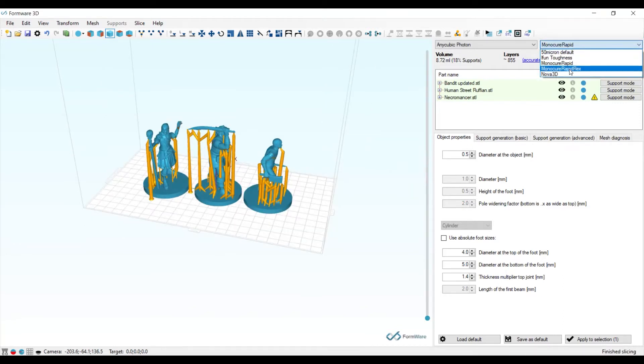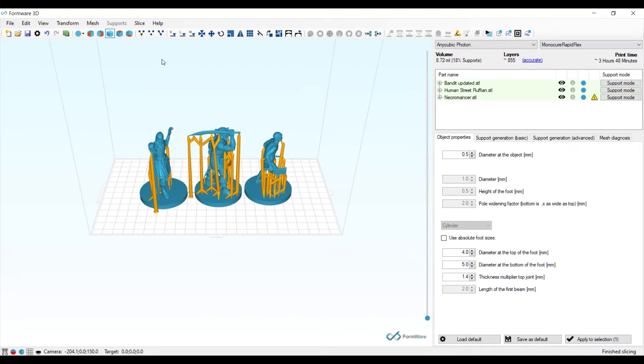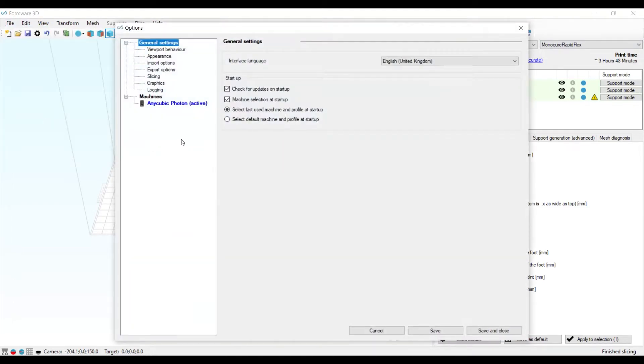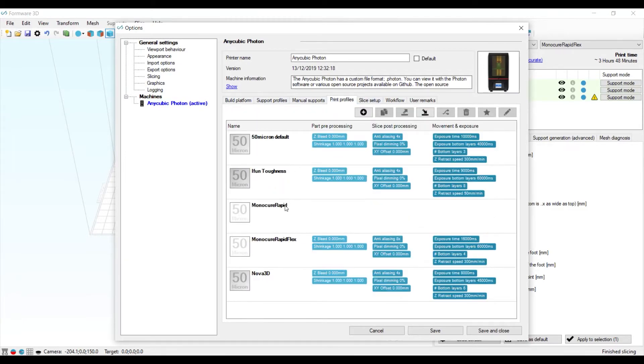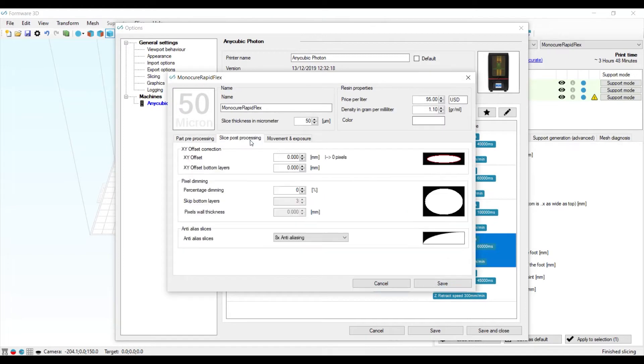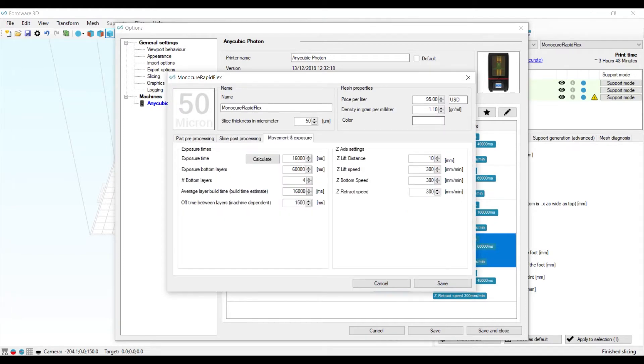On my models, I will change my profile to the Monoflex and then slice it. In this software, I can go into the configuration, into my machine, into my print profiles, and then for each resin type that I have, I can specify the settings to whatever is recommended by the manufacturer, which I highly recommend as a good starting point. You can then tweak it from there to make sure that your prints come out just the way you want them.